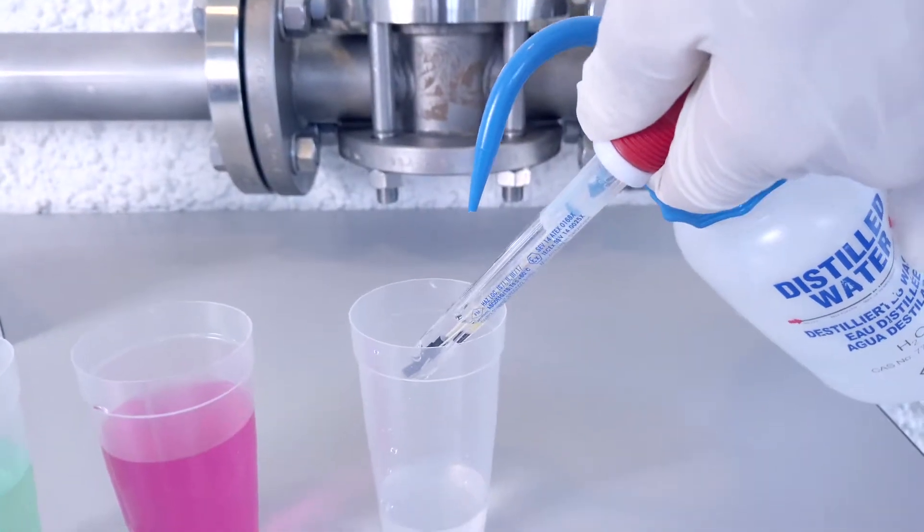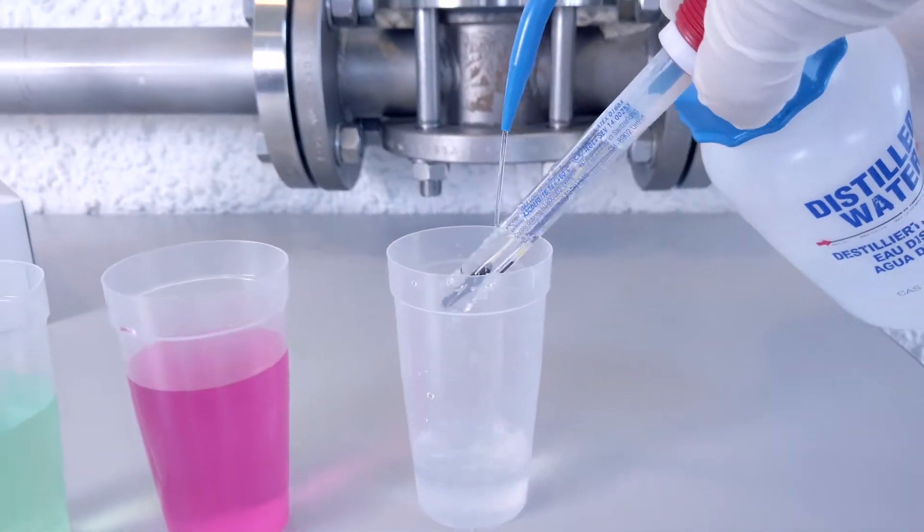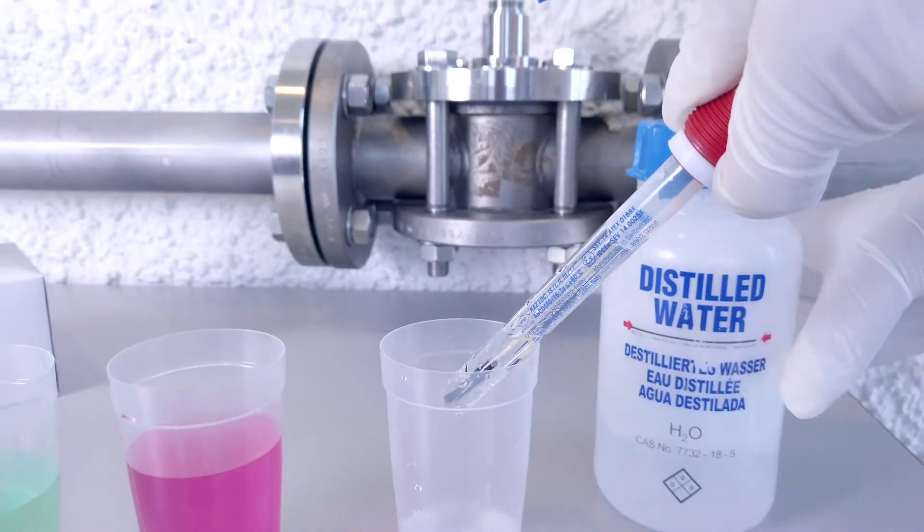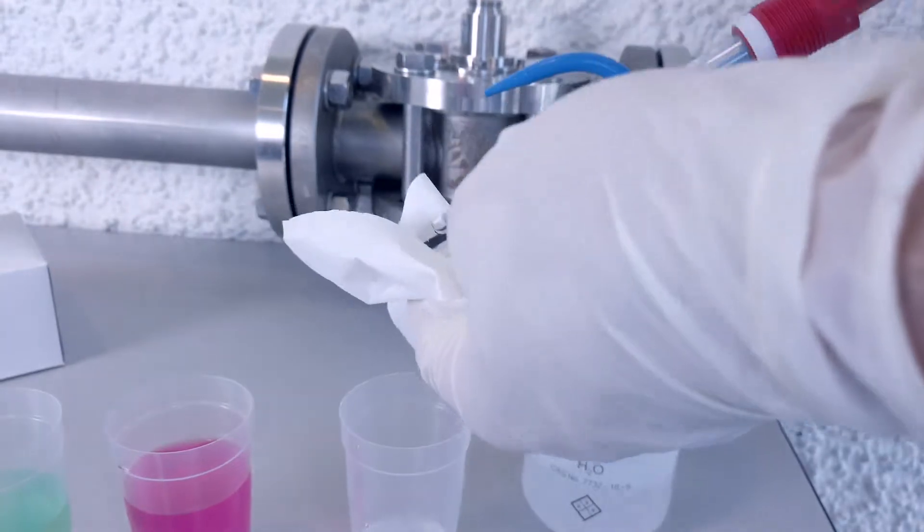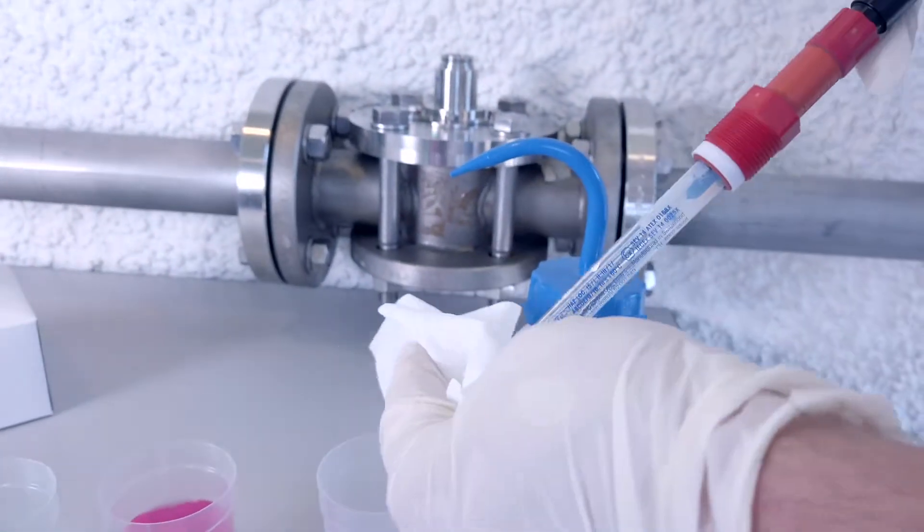Before you start to calibrate you need to rinse the sensor with distilled water in order to remove any possible contamination then dry it. Don't rub the sensor but gently pat it dry. Rubbing can induce an electrostatic charge which can affect the measurement.